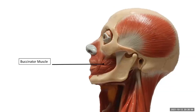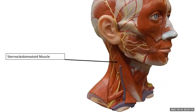Anterior to the masseter muscle is the risorius muscle — the one associated with laughter — which tenses your lips by pulling the corners of your mouth backwards. Then there's the buccinator muscle — well developed in tuba players — which keeps food from falling out of your mouth and keeps it over your teeth as you chew. The sternocleidomastoid muscle is found in the lateral and anterior portions of the neck, attaching onto the clavicle and sternum, with the insertion at the mastoid process of the temporal bone.